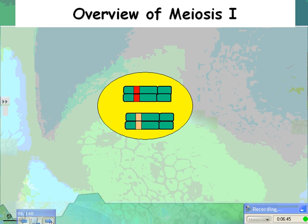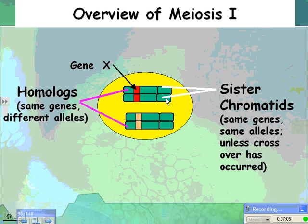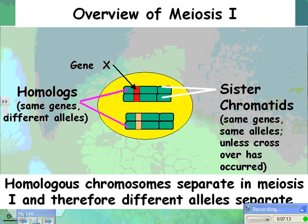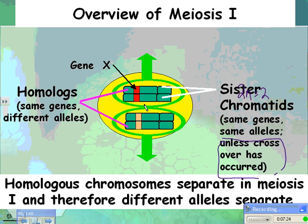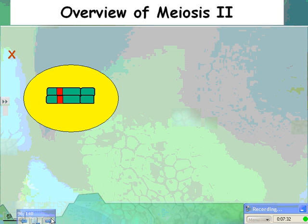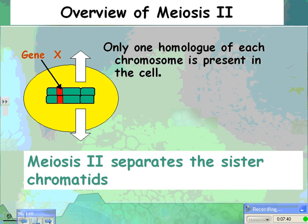Here's an overview. You have just two chromosomes — diploid number is only 2. There's gene X, and these are homologous chromosomes, meaning they have the same genes but different alleles. Sister chromatids have the same genes and same alleles. Homologous chromosomes separate in meiosis I, and therefore different alleles separate. In meiosis I, you separate out the homologous chromosomes, so you're down to one chromosome. In meiosis II, you separate those sister chromatids — only one homolog of each chromosome is present in the cell.